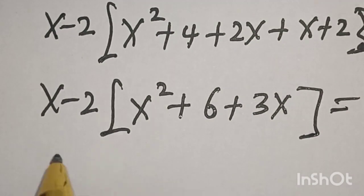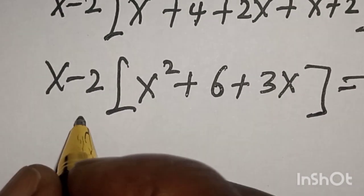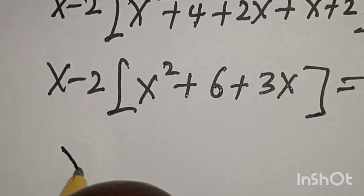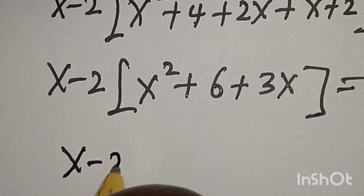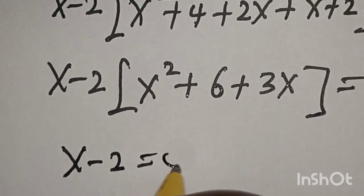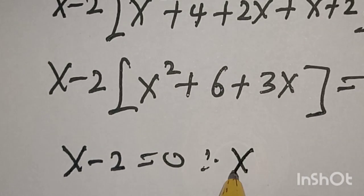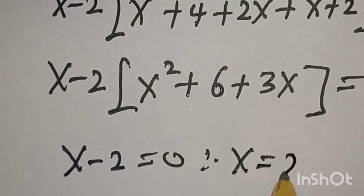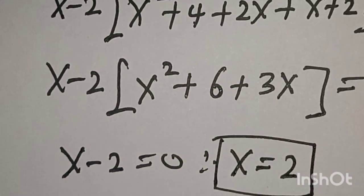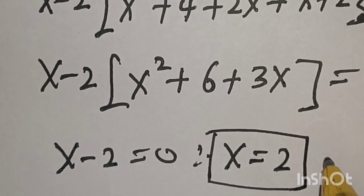Now we have two cases. Case one: s - 2 = 0, therefore s is equal to 2. That is one value of s.